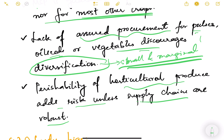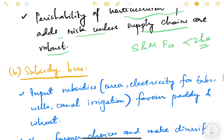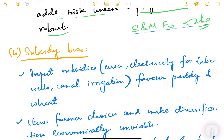Most of our farmers are small and marginal farmers — meaning farmers owning less than two hectares of land. They are called small and marginal farmers. Less than two hectares means less than approximately five acres, since one hectare is approximately 2.5 acres of land.